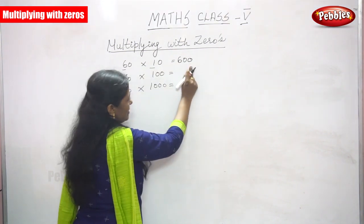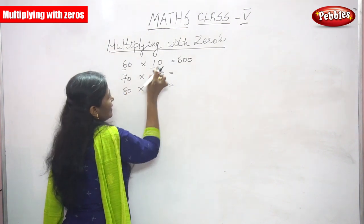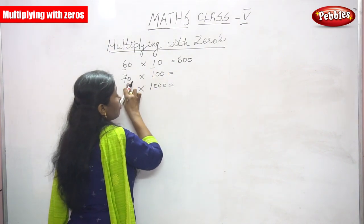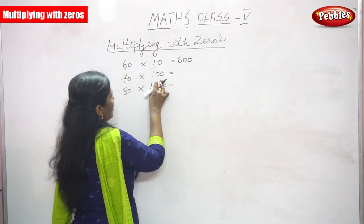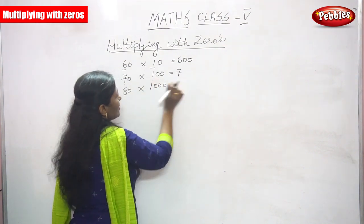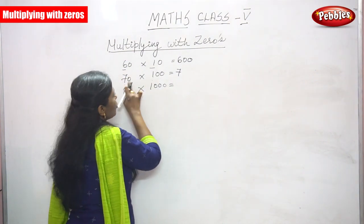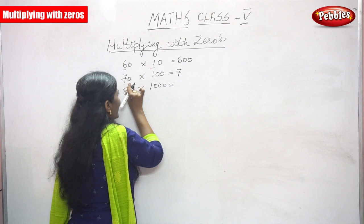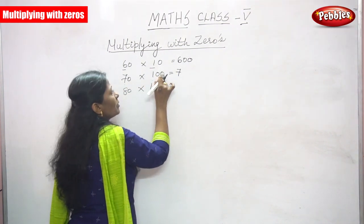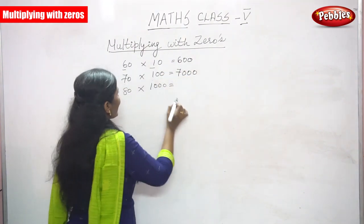Next, I'm going to multiply 70 into 100. First, multiply only the numbers: 7 into 1, you get 7. Then count the zeros — there is 1 zero in 70, and you already know there are two zeros in 100 — so 1, 2, 3 zeros total. You have to write three zeros after the number.